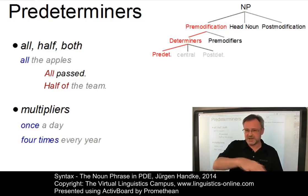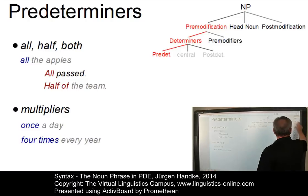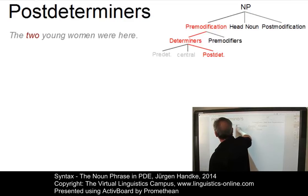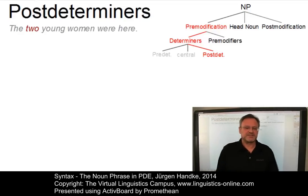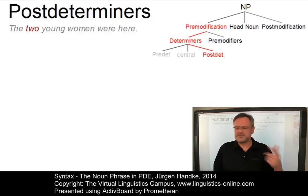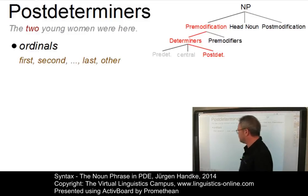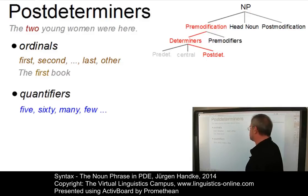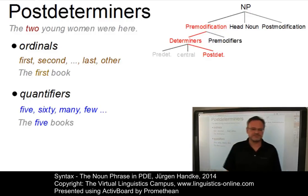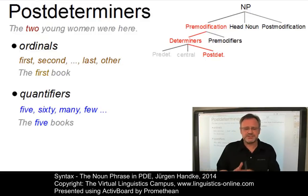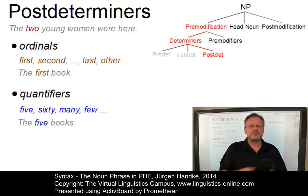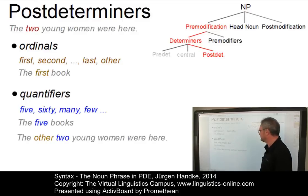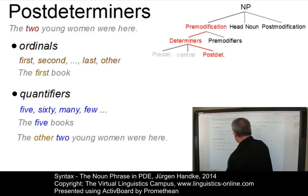So much for predeterminers. Let's now look at the post-determiners — the elements that follow the central determiners. As in the example 'the two young women were here', 'two' is an element that takes its place immediately after the central determiner. These post-determiners fall into two classes: the ordinals, such as 'first', 'second', 'last', 'other' — as in 'the first book' — and the quantifiers, such as 'five', 'sixty', 'many', 'few' — as in 'the five books'. Where ordinals and quantifiers co-occur, ordinals usually precede the quantifiers, as in 'the other two young women were here'.